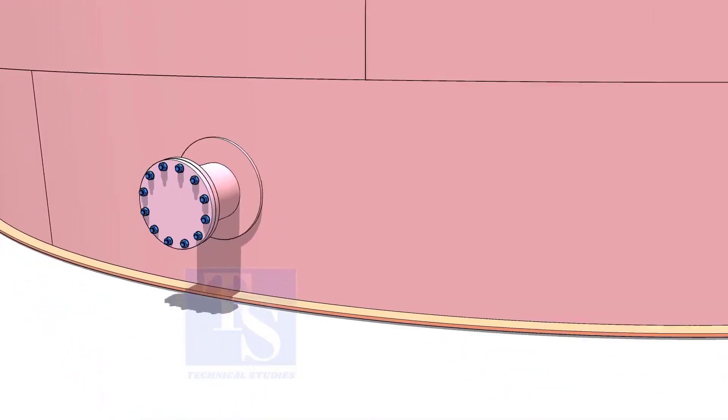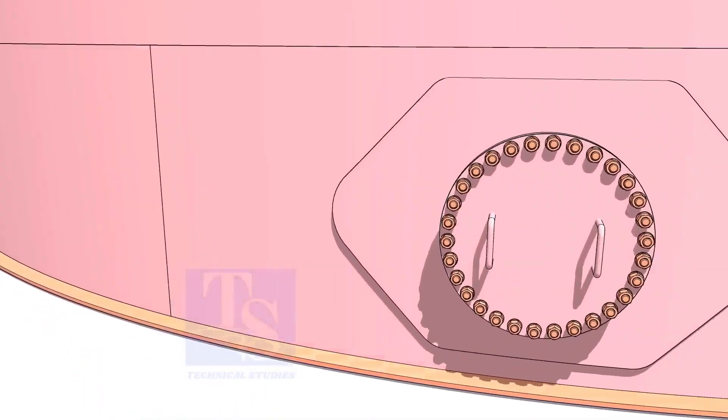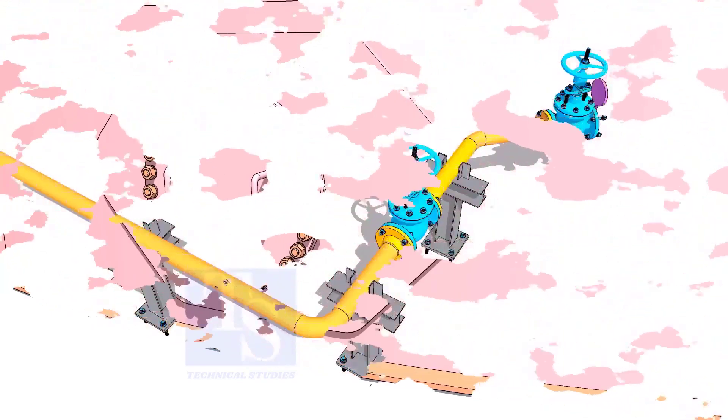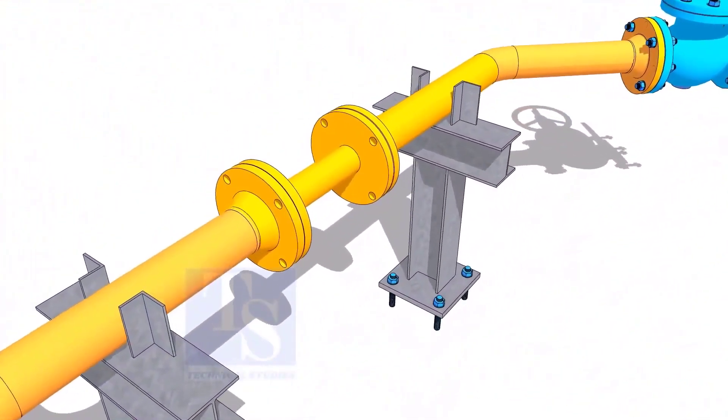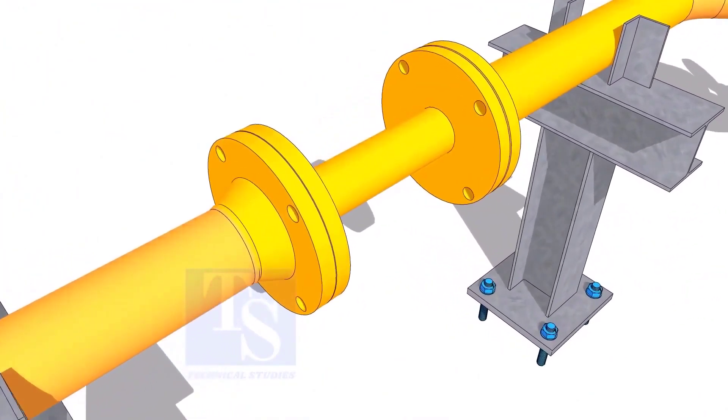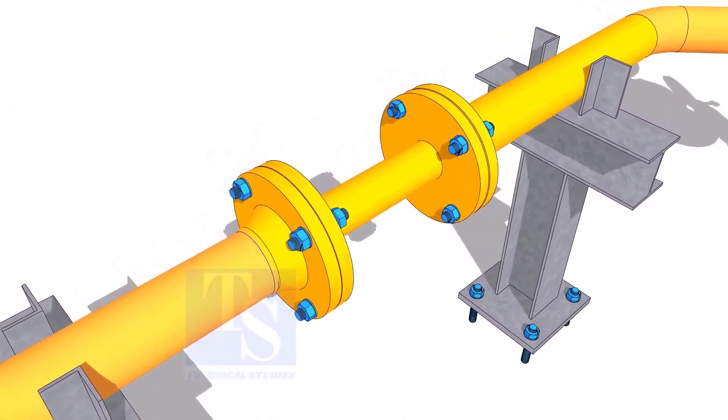Plate flanges are used for low-pressure services or to blind the nozzles of vessels, tanks, etc. for hydrotest purposes. Another use of plate flange is making temporary spools to replace valves and equipment on a piping system.